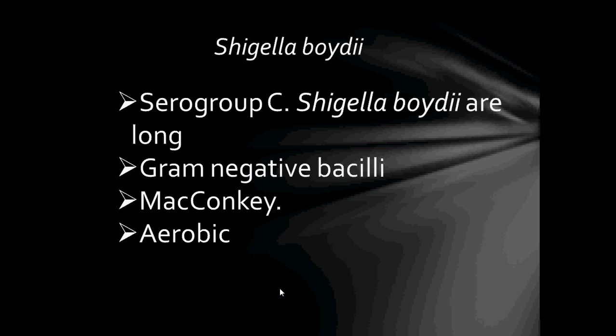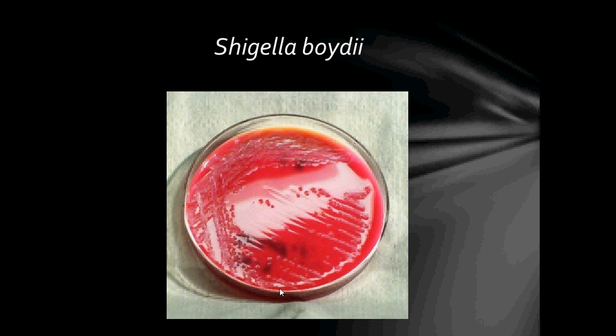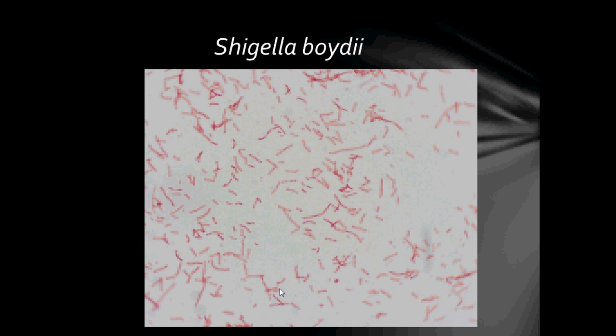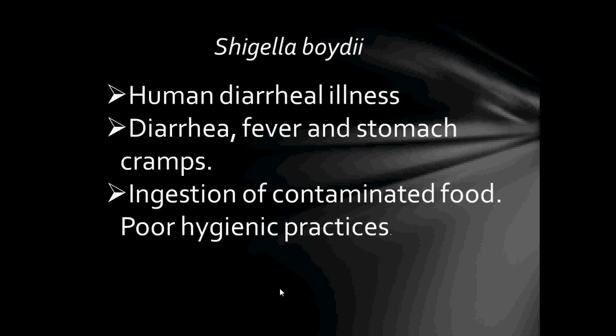Next bacteria is Shigella boydii, serogroup C. Shigella boydii are long Gram-negative bacilli. They grow on MacConkey and are aerobic. Shigella boydii causes human diarrhoeal illnesses — diarrhoea, fever, and stomach cramps — usually due to the ingestion of contaminated food and poor hygienic practices.